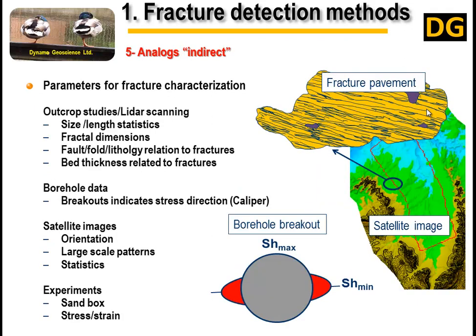Method number five is also an indirect method for fracture detection. It includes plenty of sub-items such as lab experiments, satellite imagery, borehole data, field trips, and outcrop studies.